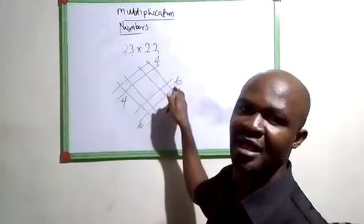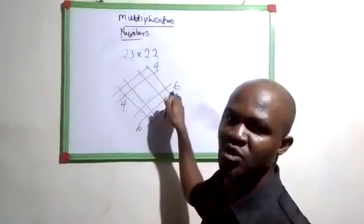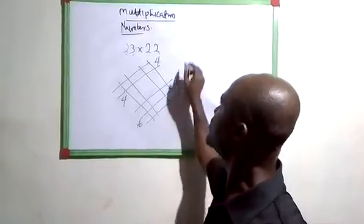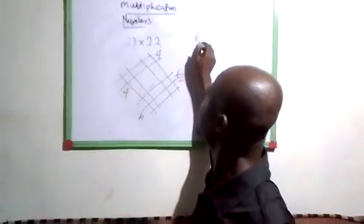Now this last number here, 6, represents the first part of the answer you have, the last digit of the answer. So the answer will start from here, the last digit will be 6.